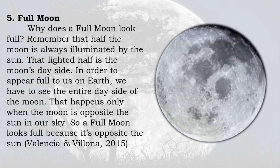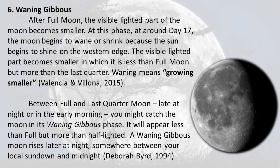Phase 5 — Full Moon: Half the moon is always illuminated by the Sun — that lighted half is the moon's day side. In order to appear full to us on Earth, we have to see the entire day side of the moon. That happens only when the moon is opposite the Sun in our sky, so a full moon looks full because it's opposite the Sun.